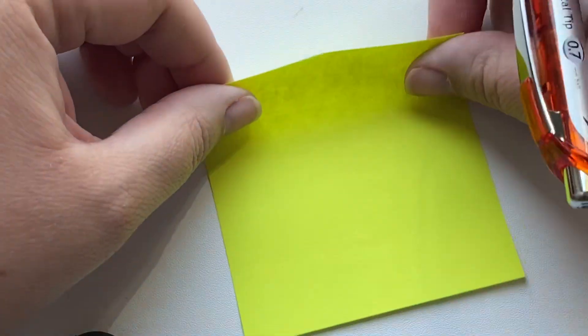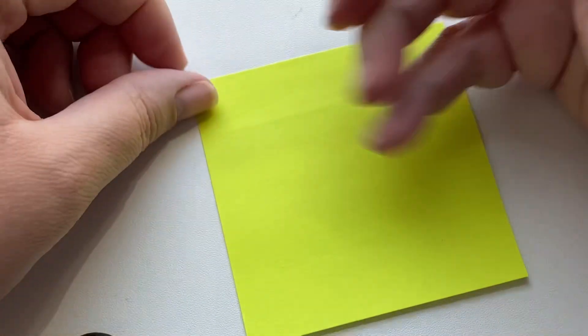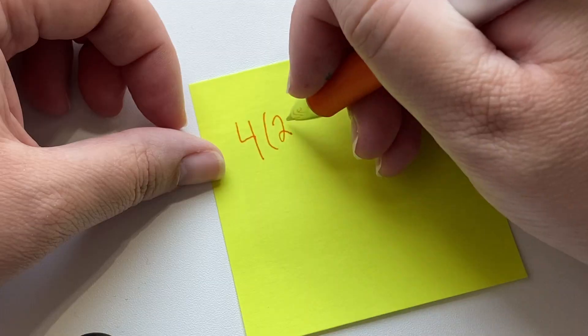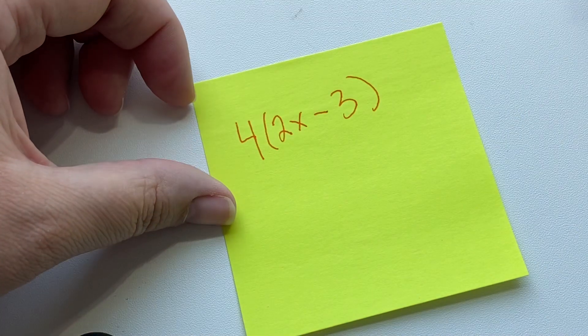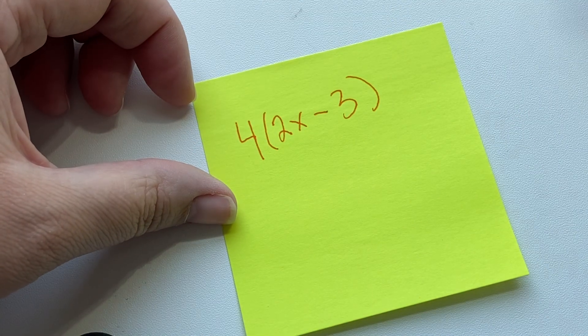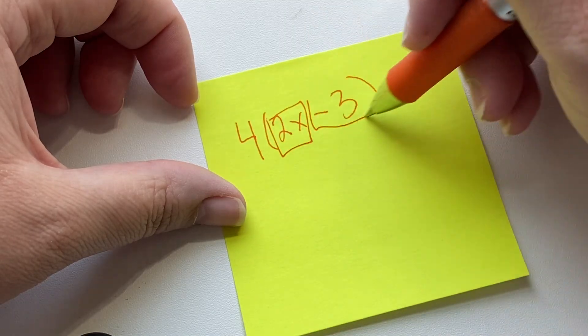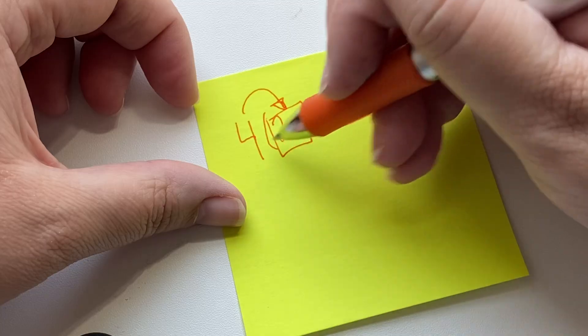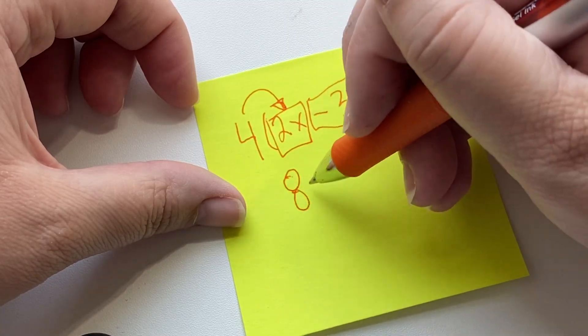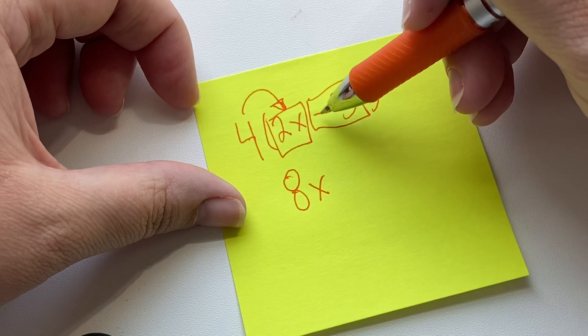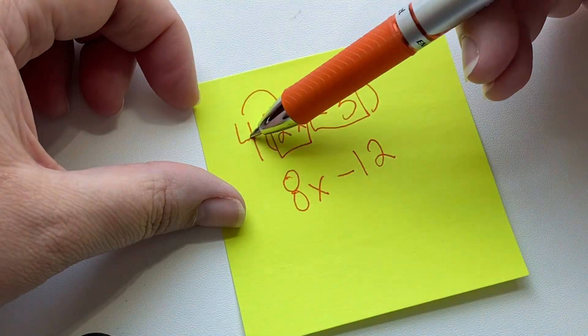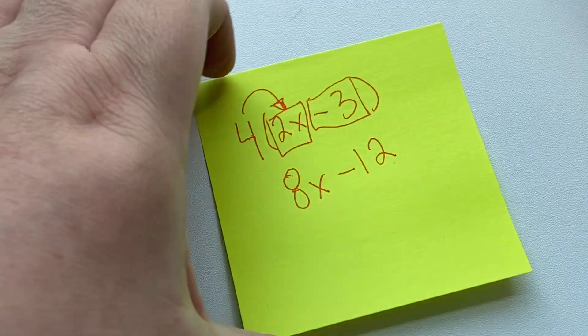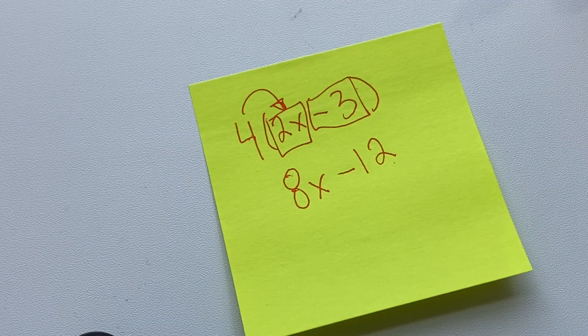Okay, let's look at another example. So let's say we have 4 times 2x minus 3. Okay, so we've got our two terms on the inside. We're going to distribute 4 to the 2x. So, 4 times 2x would be 8x. And 4 times negative 3 would be negative 12. For the same reason that we talked about before. 4 times 3 is 12, and then you have negative. Take a second to check that out. And I'm actually going to do one more with the negative on the x number.